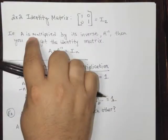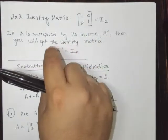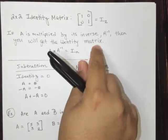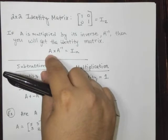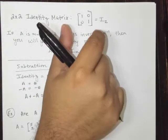And just look at this real quick. If A is multiplied by its inverse, A inverse, then you will get the identity matrix. So if you take a number, or I'm sorry, a matrix, and you multiply it by its inverse, you get the identity, this right here.